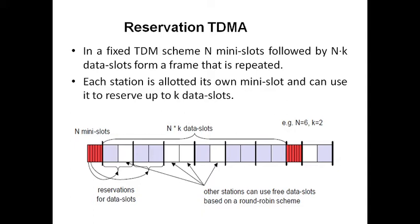In this method, some mini slots will be there. Each mini slot is again divided into n×k data slots. In one mini slot, n×k data slots will be there, which will form a frame, and that frame is repeated continuously. If you observe in the diagram, the red box represents one of the mini slots.